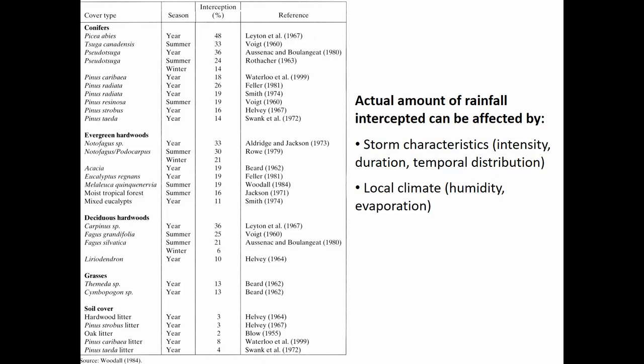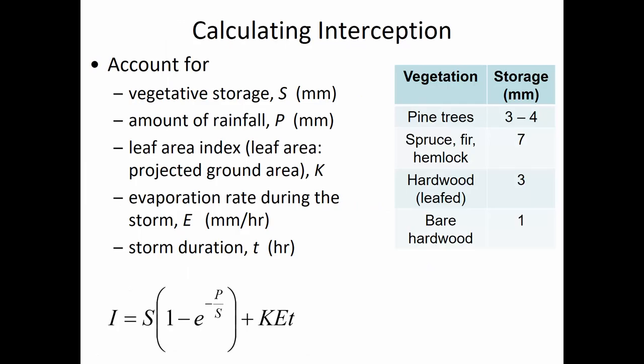Local climate can affect interception — if leaves are already coated with mist from foggy conditions, that reduces interception. The density of vegetation matters too: a single isolated tree intercepts differently than one surrounded by other trees. And of course the age, size, and health of the vegetation matter — a relatively new, shorter tree will intercept less water than a large, mature tree.